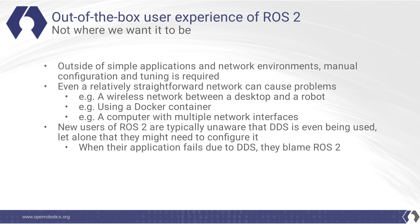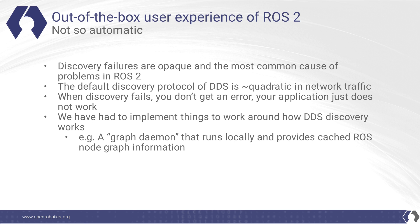These problems have often been encountered by new users of ROS2 who are typically unaware that DDS is even being used. To them, they're using ROS2 — they don't know it uses DDS internally, and they aren't aware that they might need to configure it for their network. So when their application fails due to DDS, they blame ROS2. Discovery failures in particular have been a problem for us. They are opaque, and the most common cause of problems in ROS2. The discovery protocol of DDS is approximately quadratic in network traffic.